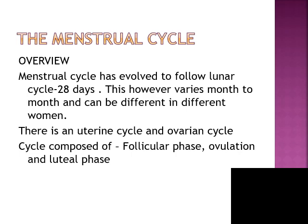Good morning. Today we'll talk about the normal menstrual cycle. The onset of the menstrual cycle is part of the pubertal changes in a female. It usually happens around 10 to 14 years of age. The menstrual cycle evolved to follow a lunar cycle, which is approximately 28 days, so it is 28 plus or minus 7 days. Any menstrual cycle within a period of 21 to 35 days is considered to be within the normal limit.